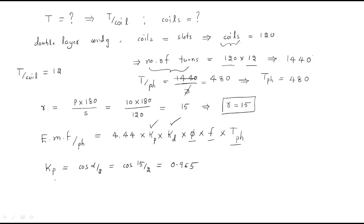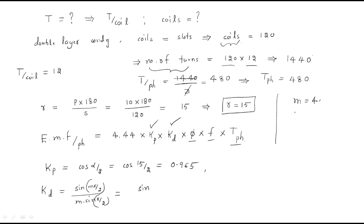The distribution factor Kd = sin(mγ/2) / (m × sin(γ/2)), where m = slots per pole per phase = 4, and γ = slot angle = 15°. So mγ = 4 × 15 = 60°. Therefore: Kd = sin(60/2) / (4 × sin(15/2)) = sin(30°) / (4 × sin(7.5°)) = 0.957.